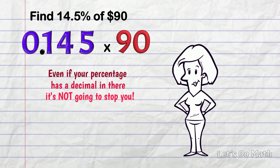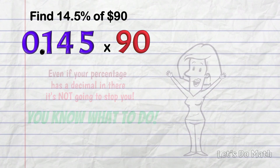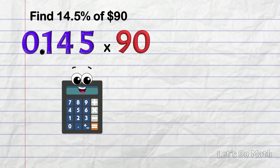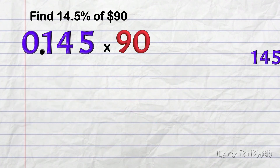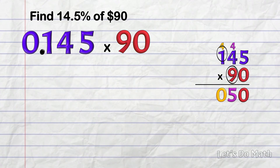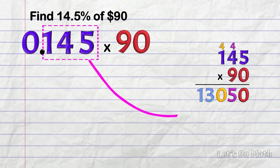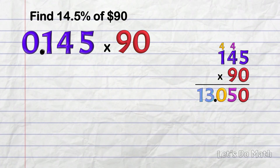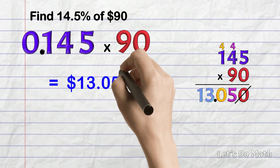You would just multiply 90 by 0.145. Even if your percentage has a decimal in it, it's not going to stop you. On paper: 1.45 × 90. Start with a 0 because we're multiplying by 9 tens. 5 nines are 45, 4 nines are 36 plus 4 is 40, 9 ones are 9 plus 4 is 13. That gives 13.050 — 3 decimal figures in the problem, 3 in the answer. We can drop the final zero: the answer is $13.50.